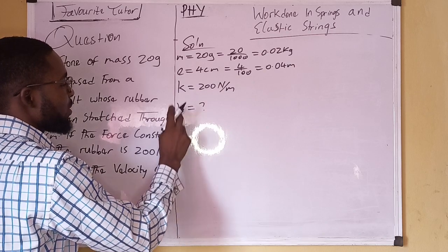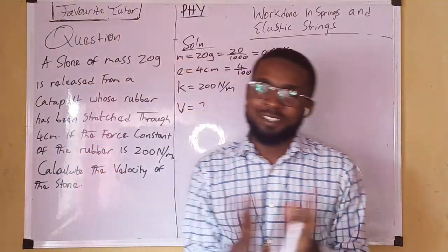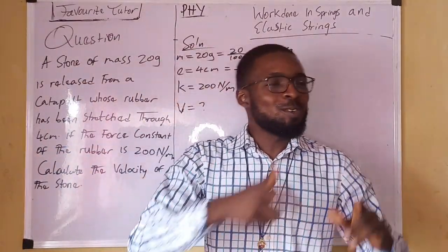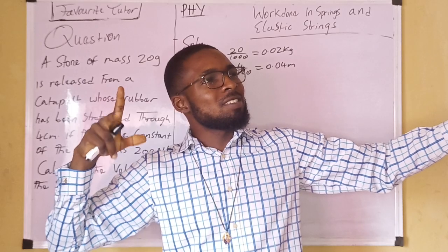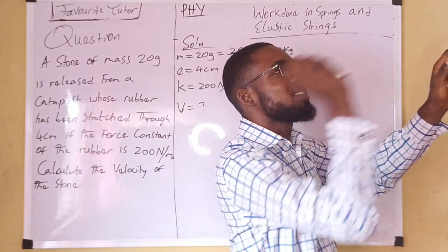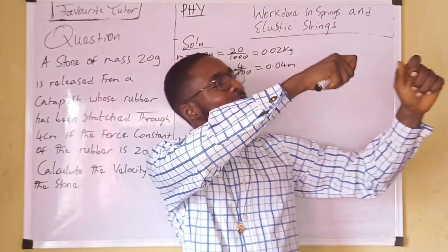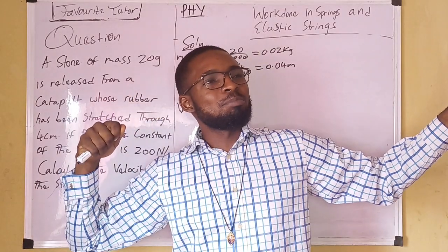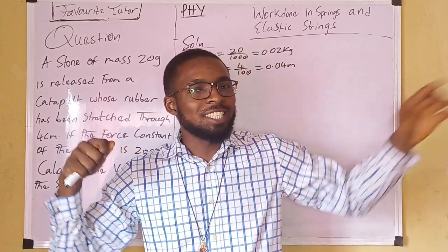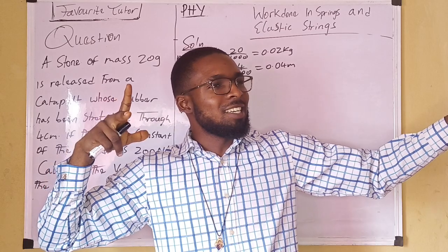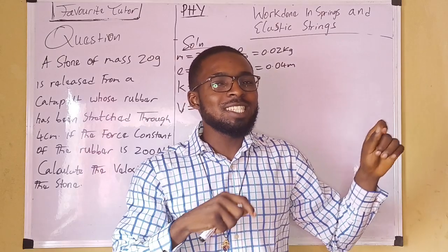Let's illustrate this question with a practical sense. We have a stone in a catapult, and we stretch the rubber of the catapult. By virtue of the stone's position, it possesses elastic potential energy. When we release the stone, it takes off with a velocity, and by virtue of its motion it possesses kinetic energy.